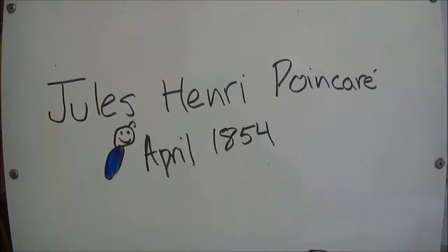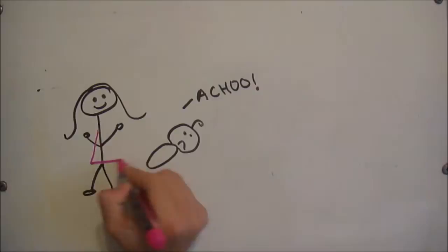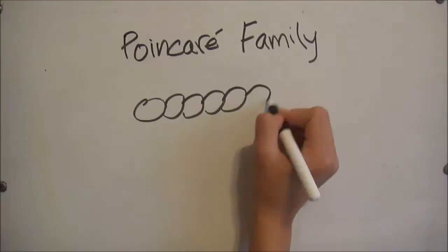Jules-Henri Poincaré was born on April 1854 in Nancy, France. His father was a professor of medicine at the university in Nancy. His mother treated him when he fell ill from a very serious case of diphtheria as a child.